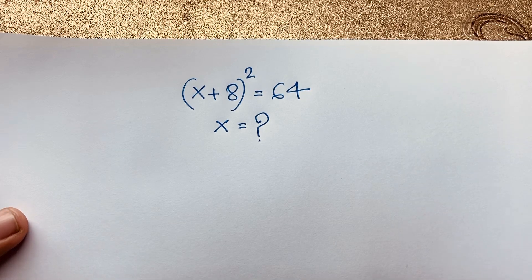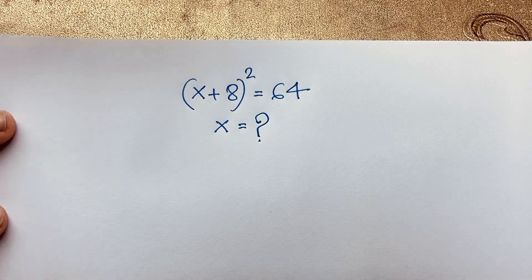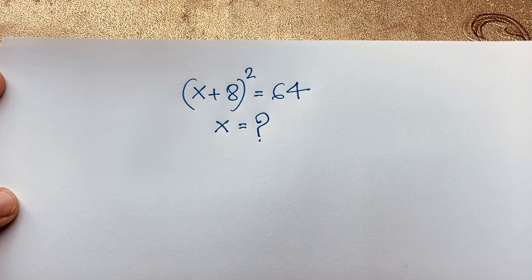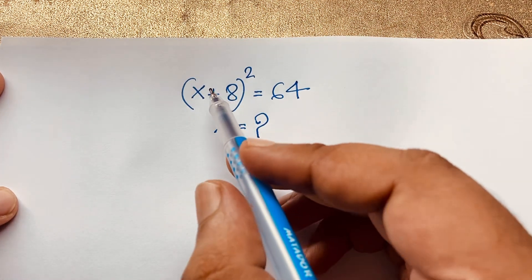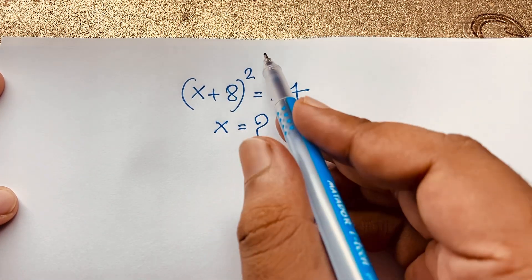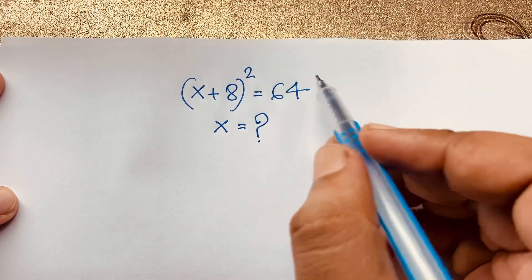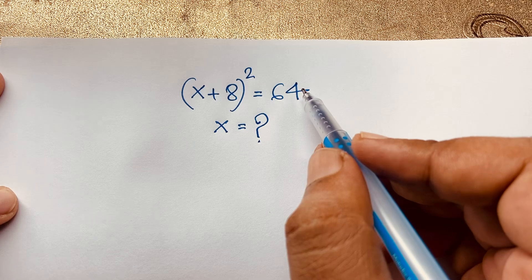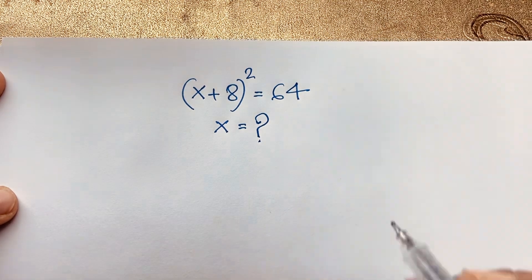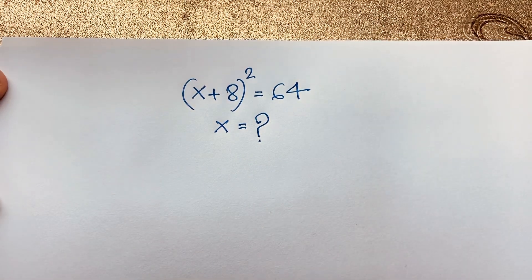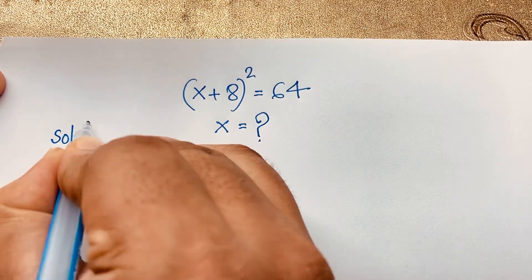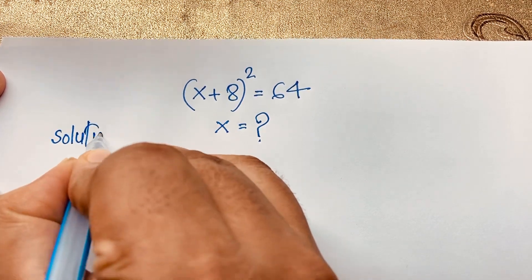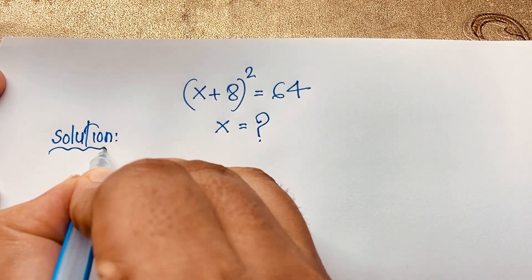Hello everyone, welcome to Rasha's classroom. Today we have solved an easy math problem: this algebra problem which is (x + 8)² = 64. What is x equal to? I solved this question using an easy method, three different ways.